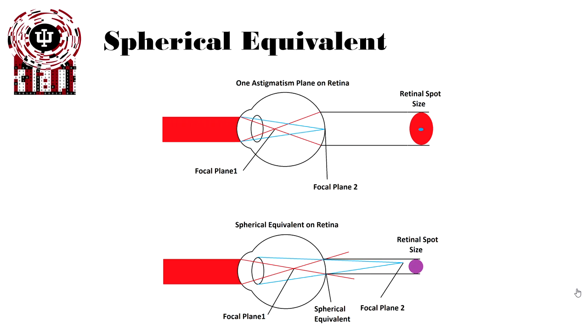Well, that exists in astigmatism too. The only difference between myopia and astigmatism, or hyperopia, is that it now has two planes that are focused, one in front of the other.